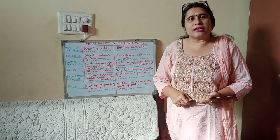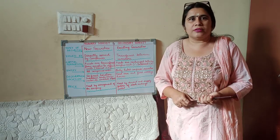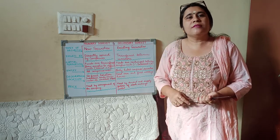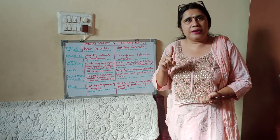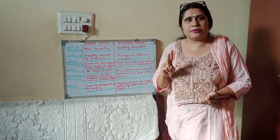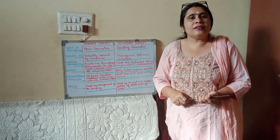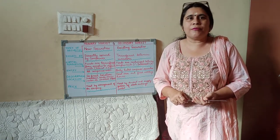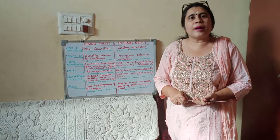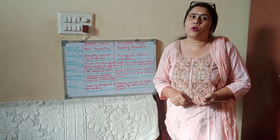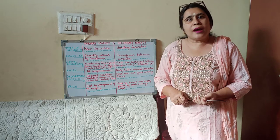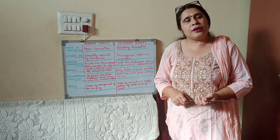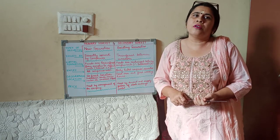Students, we learnt about classification of financial market. Financial market is divided into two parts: money market and capital market. We also learnt that money market deals in those instruments which are issued for a period of less than one year, and capital market deals with those financial assets, financial securities and financial instruments — that is, shares, debentures, etc. — which are issued for more than a period of one year.